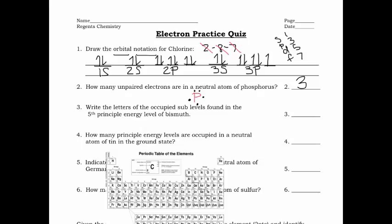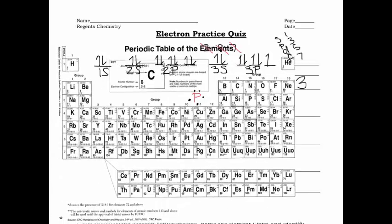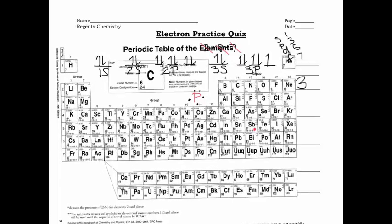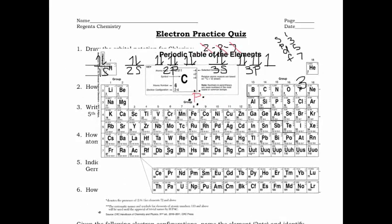Number three: write the letters of the occupied sublevels found in the fifth principal energy level of bismuth. You may need to look up bismuth in Table S — it's right here. What you'll notice about the electron configuration is that if you start with 18 and count over, you don't see a fifth principal energy level directly. The outermost principal energy level is always the row or period, so the outermost is the sixth, and where you have that 18 is actually the fifth.